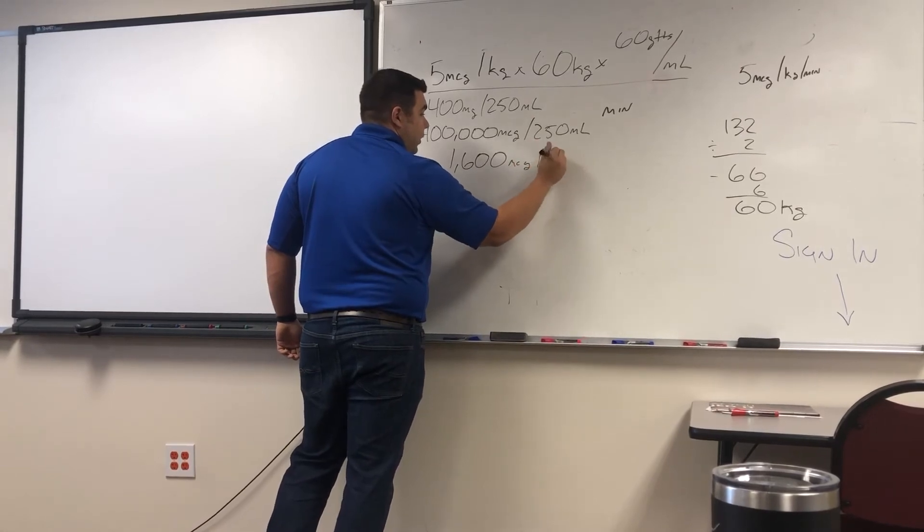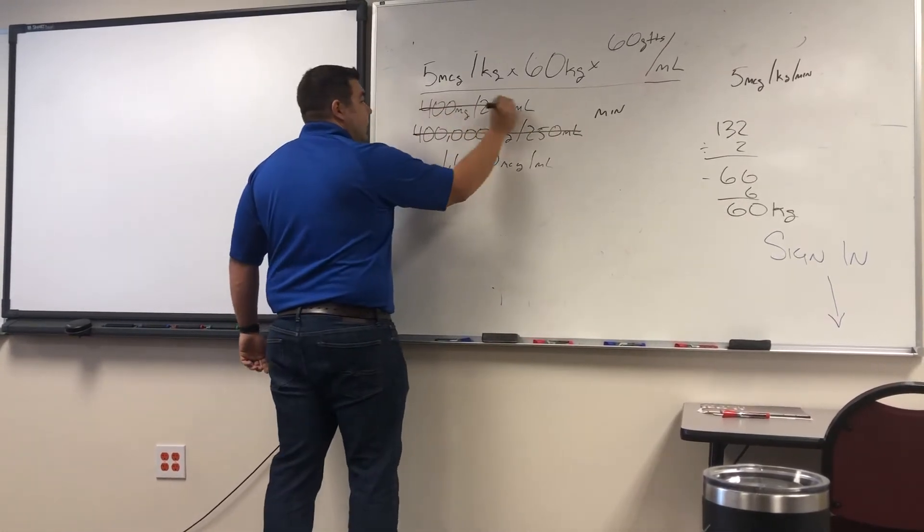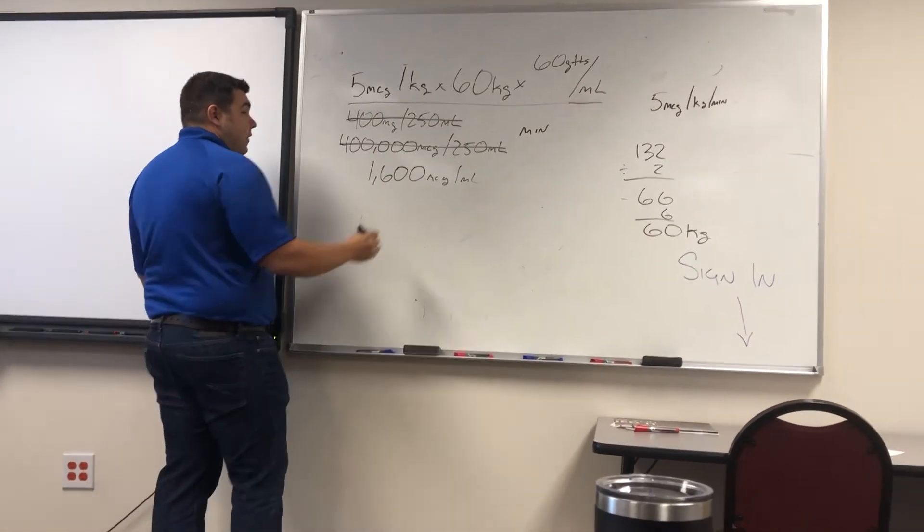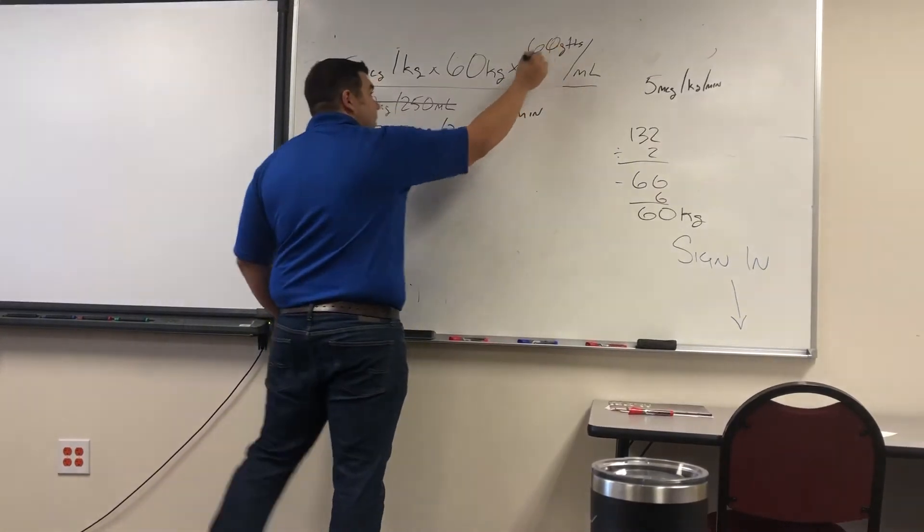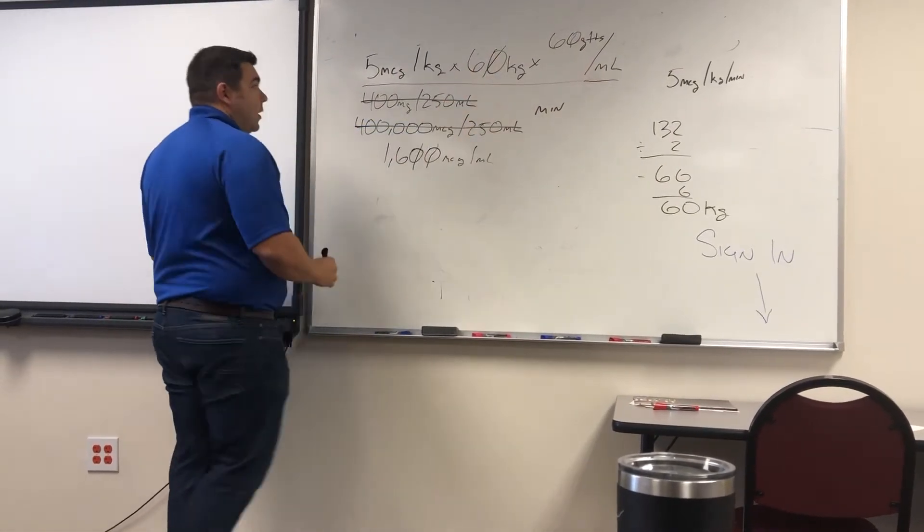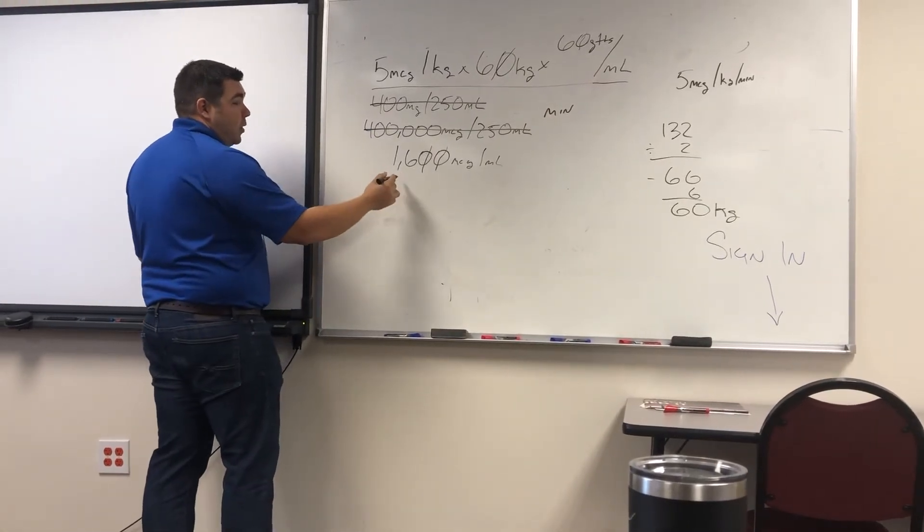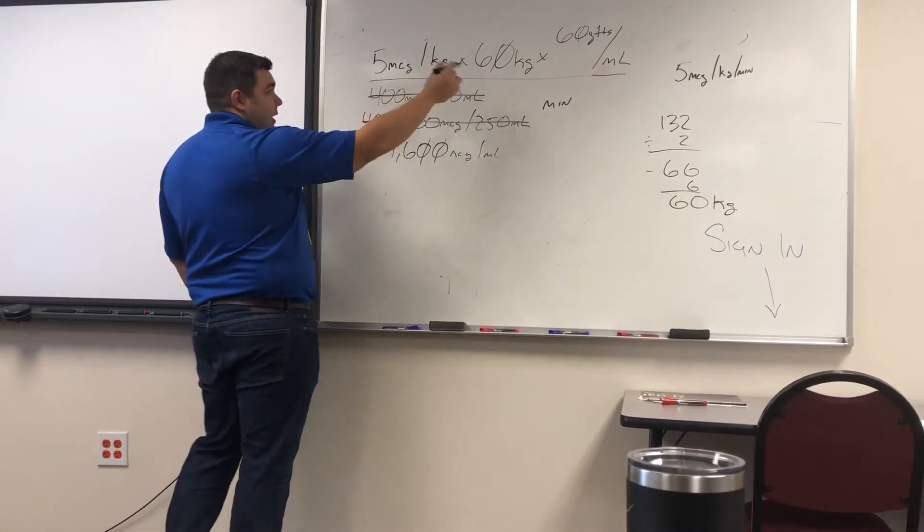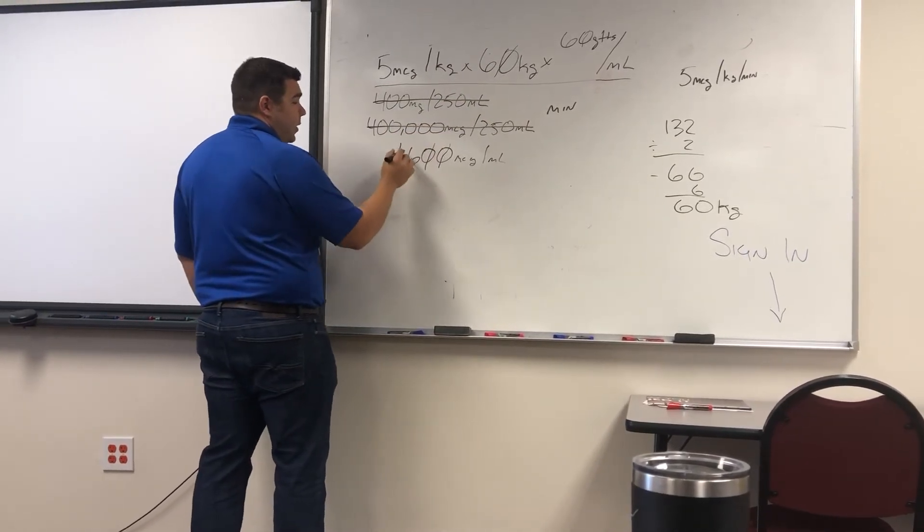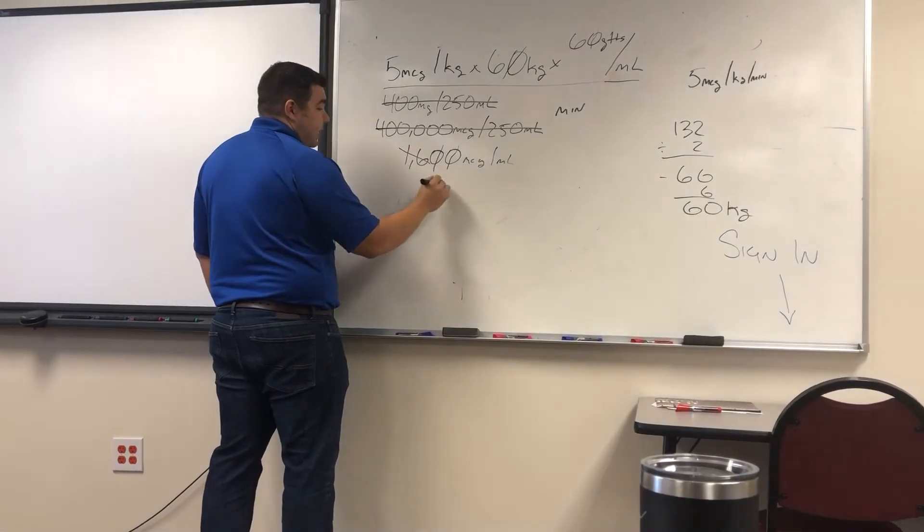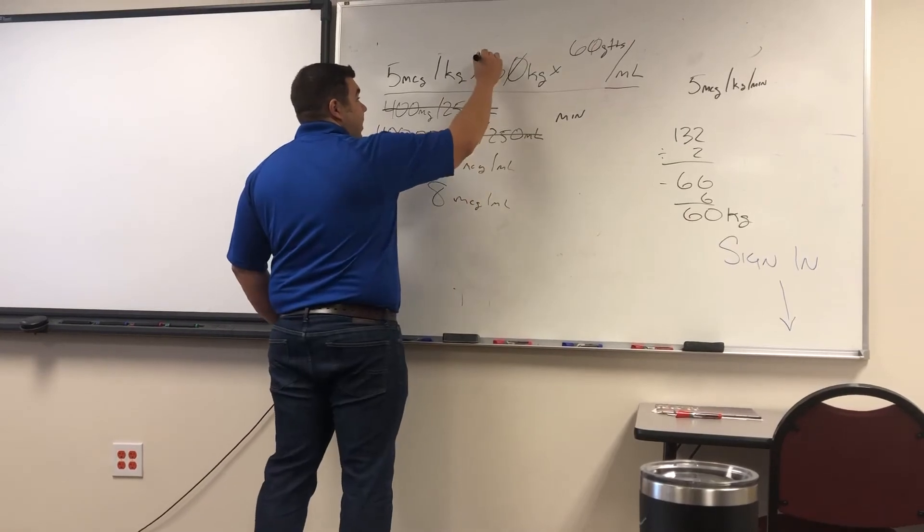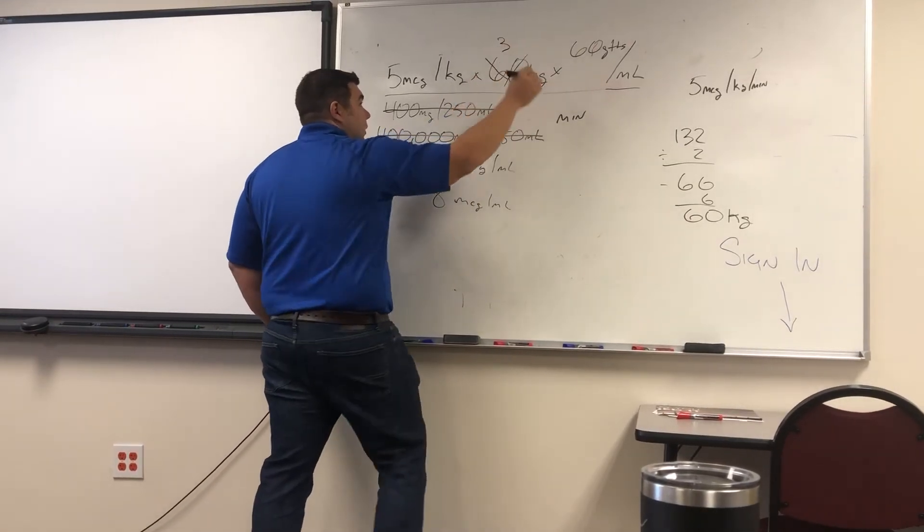Micrograms per milliliter. So cross out the stuff you're not using as you go. And again, to make this easier, if you have a zero down here and a zero up here, you can go ahead and cross those out. Zero, zero. Do I have an even number on the bottom? Yes. Do I have any even numbers on top? Yes. So I can divide. If they're even, I know I can divide them by what number? Two. So 16 divided by 2 is 8. 6 divided by 2 is 3.